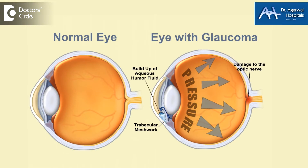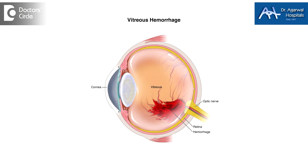The most important causes for blind spots in the eye are Glaucoma and Hemorrhage. Hemorrhage can be caused due to so many factors, most importantly diabetes and hypertension. These cause a small area of our retina that we do not see.